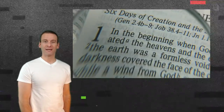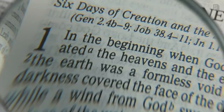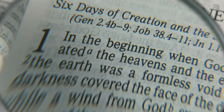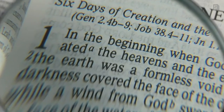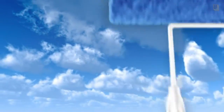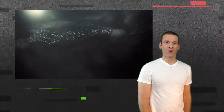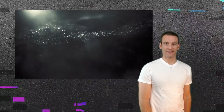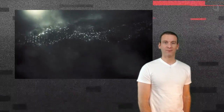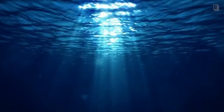Moses explained the different days and what God created on those days. In the beginning God created the heavens and the earth. On the first day God created light and separated light from the darkness. God called the light day and he called the darkness night. Then Moses specified that there was evening and morning of the first day.